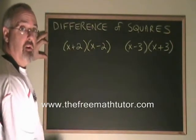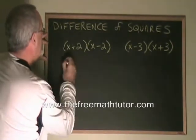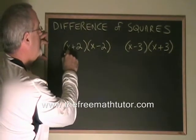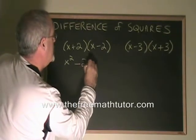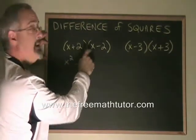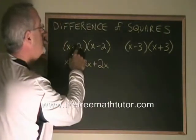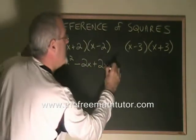Using the FOIL method, x times x is x squared. x times negative 2 is minus 2x. 2 times x is plus 2x. 2 times negative 2 is minus 4.